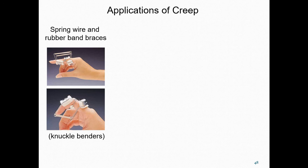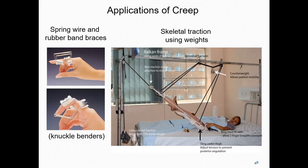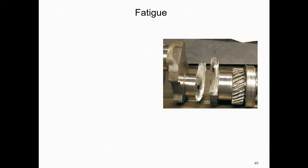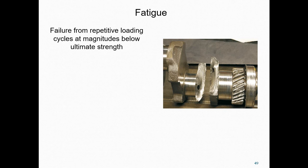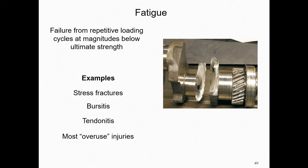The next concept to look at is fatigue. Fatigue refers to a process in which a material becomes weakened from experiencing multiple repetitive loading cycles. This process can lead to mechanical failures at magnitudes of stress below the ultimate strength of the material. Fatigue is seen in both non-biological and biological tissues. Examples of fatigue in biological tissues include stress fractures, bursitis that occurs when bursae become inflamed, tendonitis, and most overuse injuries.